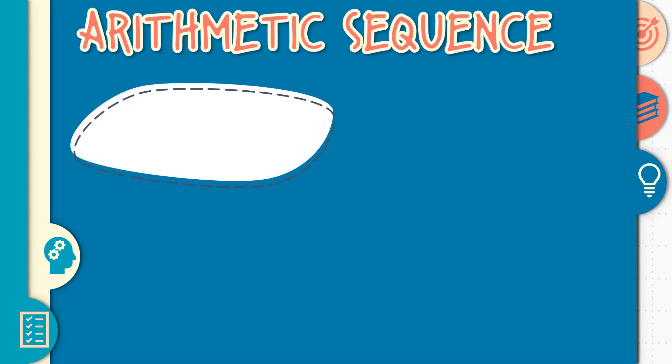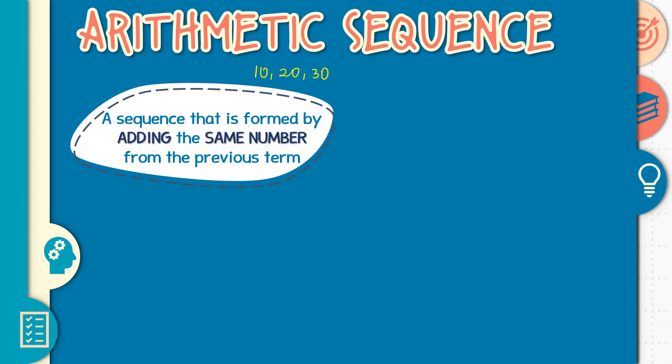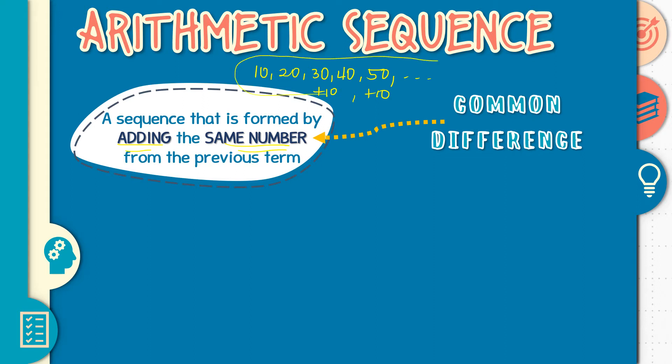That sequence is called arithmetic sequence. Why? Let us define what is an arithmetic sequence. It is a sequence that is formed by adding the same number from the previous term. Kung matataandaan ninyo yung ating sequence kanina sa Ipon Challenge, we have 10, 20, 30, 40, and 50. Nadadagtagan yung bawat term ng? Yes. Plus 10 lang tayo ng plus 10 sa lahat ng terms. So that is adding the same number and we call that same number as the common difference. So in this particular sequence our common difference is 10.